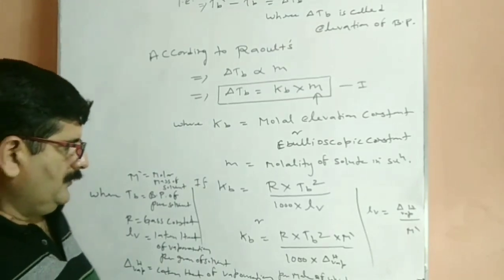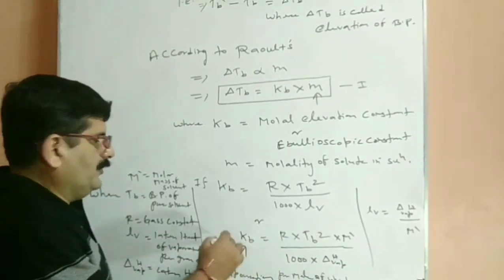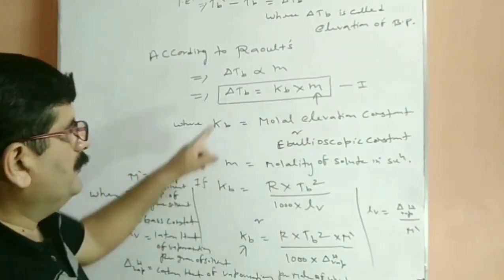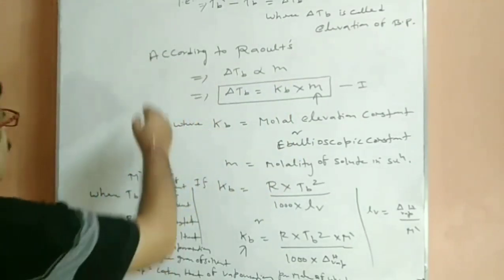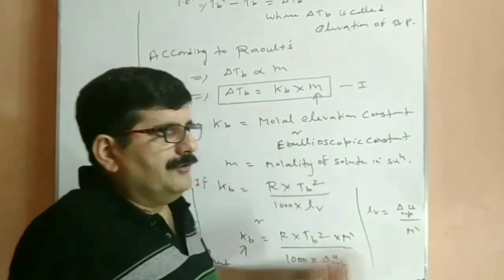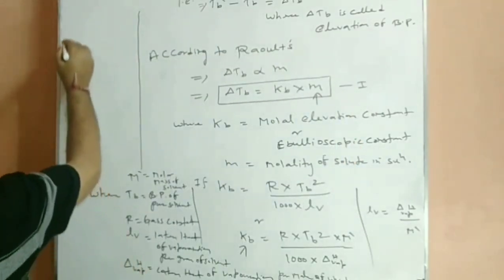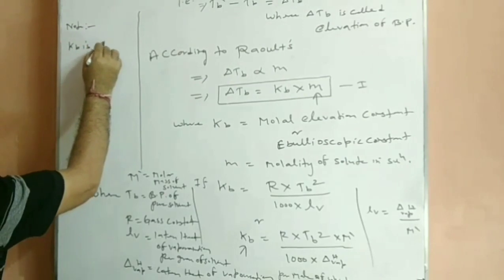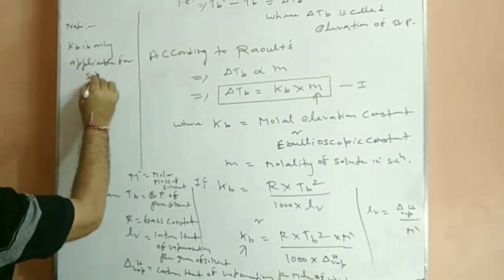So if all terms are given, then we can find out the value of Kb. If Kb is known and molality is known, then we can determine the elevation of boiling point. One thing always remember: the Kb concept is only applicable for the solvent.